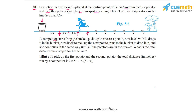A competitor starts from the bucket, picks up the nearest potato, runs back with it and drops it in the bucket, then runs back to pick up the next potato. The racer would have stood at the position of the bucket, first gone to the first potato, picked it up, and then come back. So the distance traveled would be 5 meters one way and then back 5 meters to put the potato into the bucket.